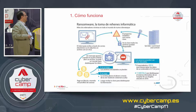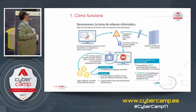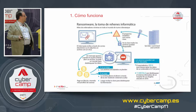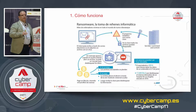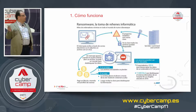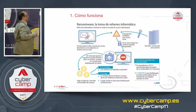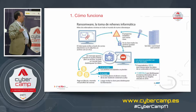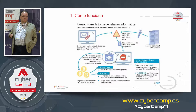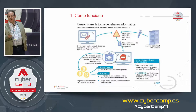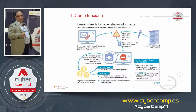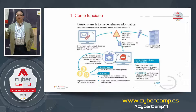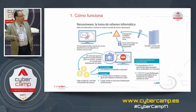Here you can see how encryption ransomware operates. In the case of a phishing attachment, an executable file infects the device. Once infected, the ransomware generates a public and private key pair that are sent to a command and control server, so the cyber criminal holds the private key to decipher the files. All files on the hard drive are encrypted, the originals are erased, and the user loses access to their data. A screen then appears requesting a ransom.